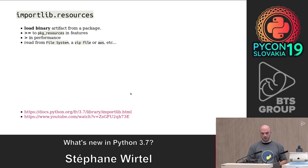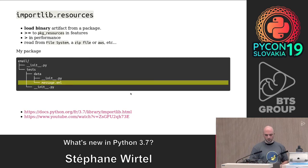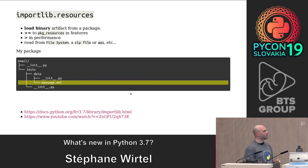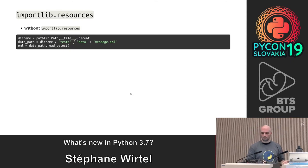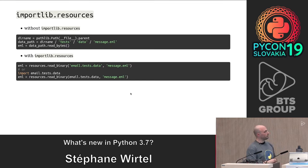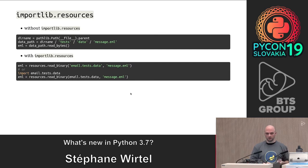There is a new library: importlib.resources. With this we can load a binary file from a package. Before, to read a binary file from a test with Python 2 or Python 3 before 3.7, we had to use pkg_resources or just build the path manually and read the bytes. With 3.7, we can import resources from importlib and just use read_binary — it's shorter. The improvement is about performance and a simpler interface.